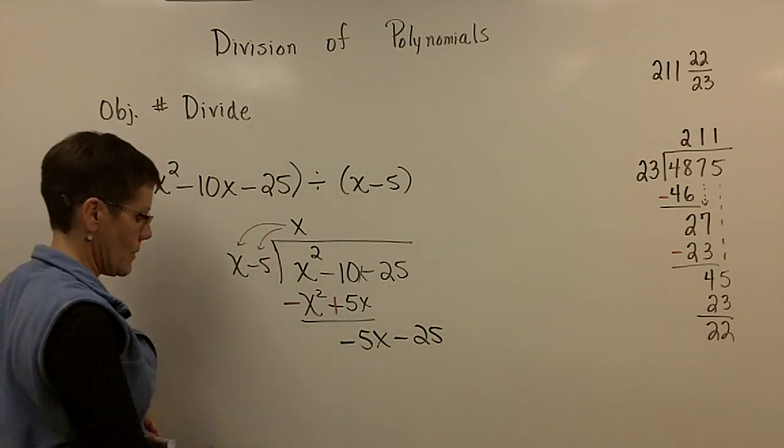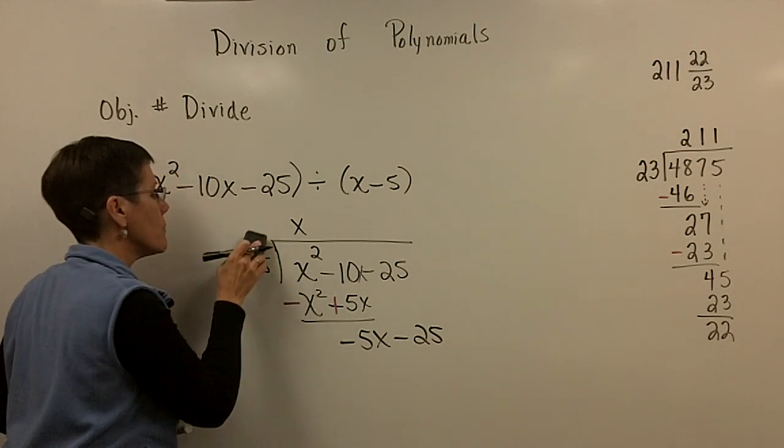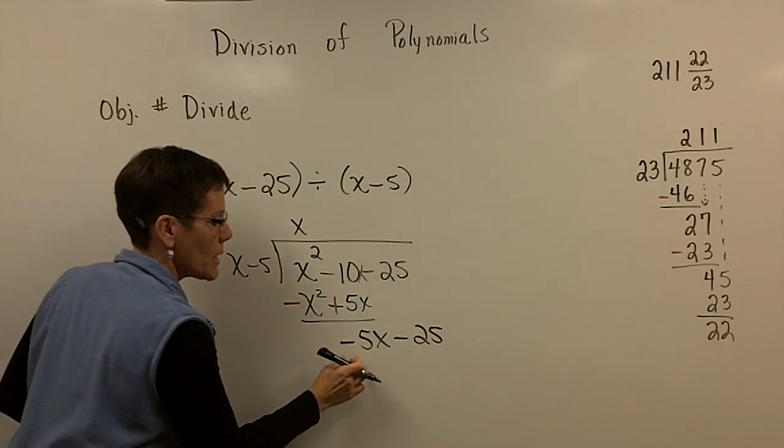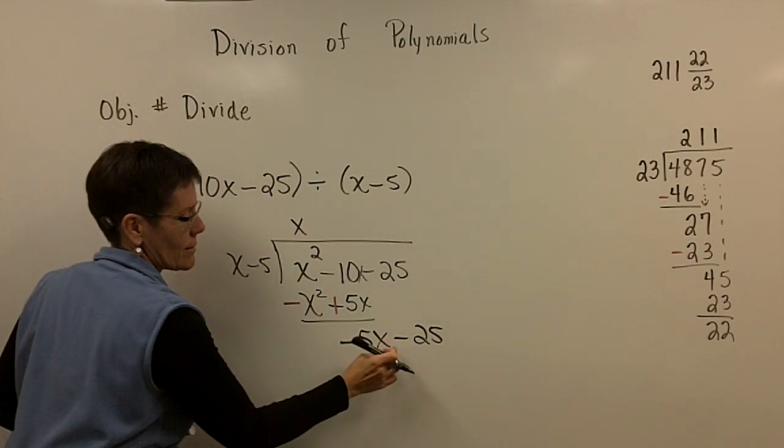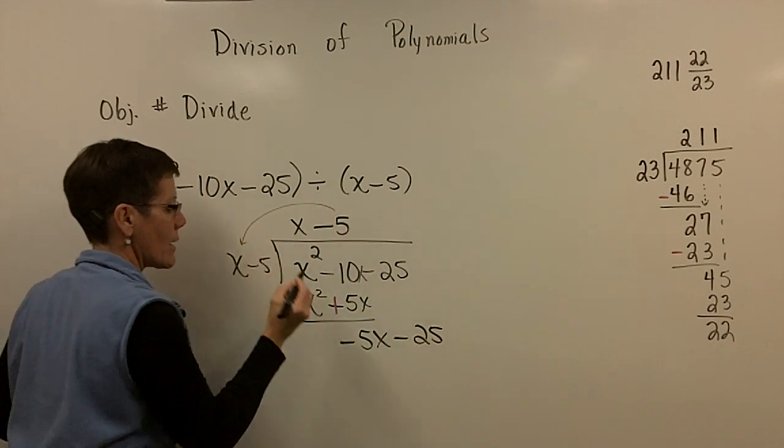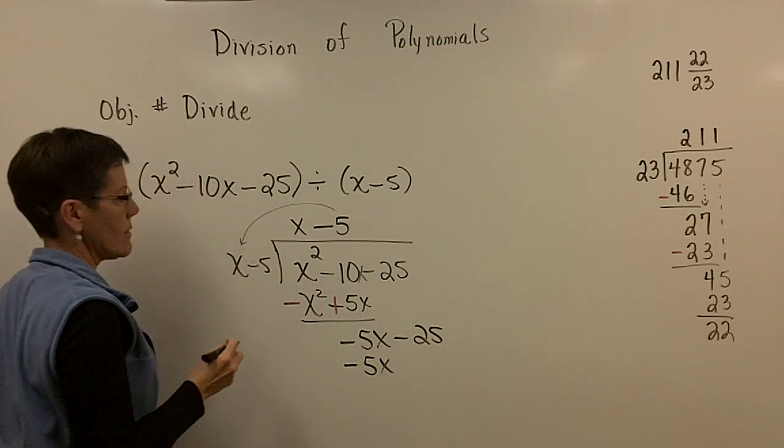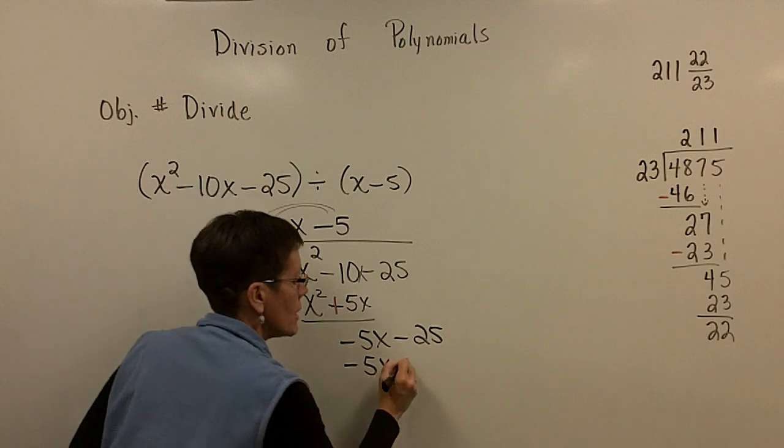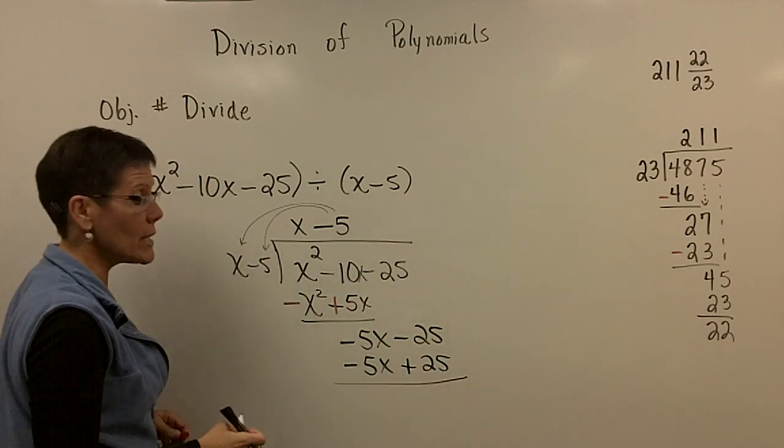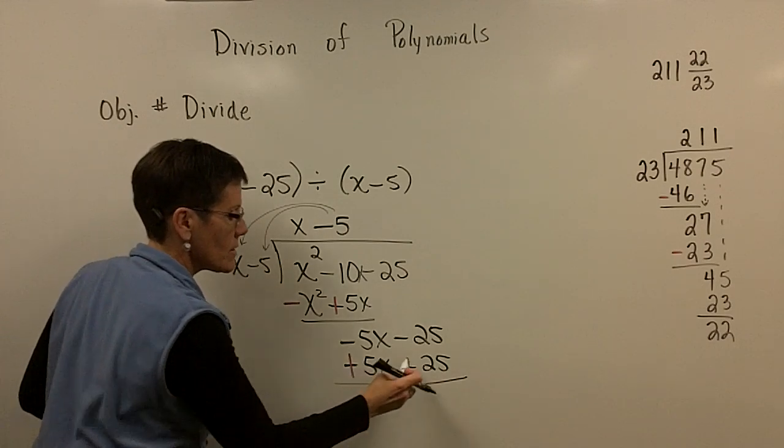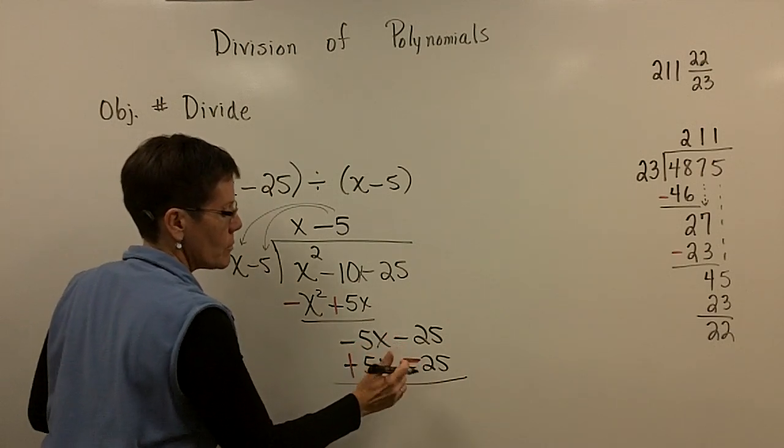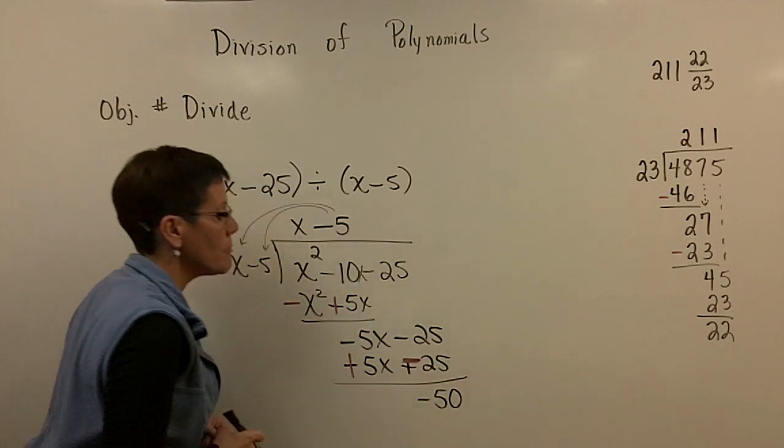So now I'm kind of going to say to myself, what number times x gives me a minus 5x? A minus 5 times x gives me a minus 5x. And a minus 5 times a minus 5 gives me a positive 25. But I have to subtract at this point. So I have to add the opposite. So I have to change this sign and change that sign. The first terms will always add to be zero. This minus 25 and minus 25 is a total of a minus 50. And finally,